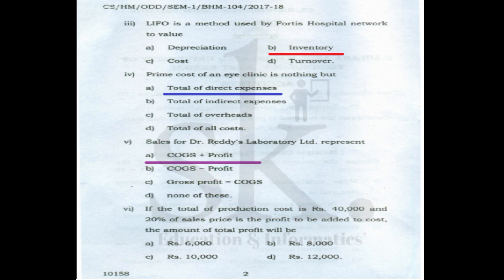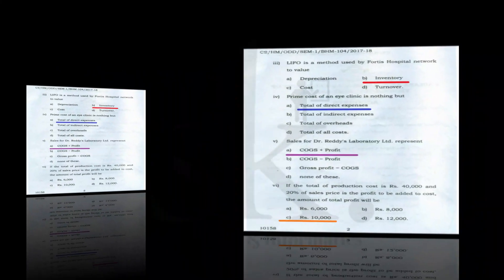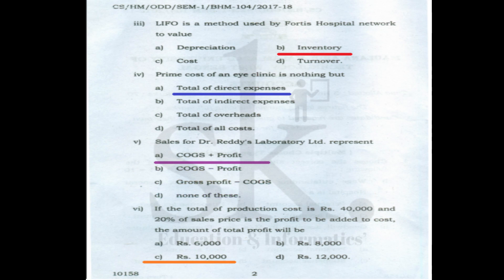Question number six: if total production cost is ₹40,000 and 20% of the sale price is the profit, the total profit will be — if sale price is 100, profit is 20, so cost is 80. Profit on cost = 20/80. When cost is ₹40,000, profit = 20/80 × 40,000 = ₹10,000. The correct option is C.